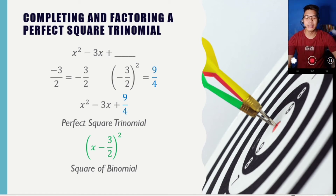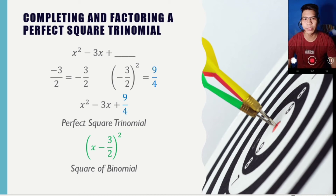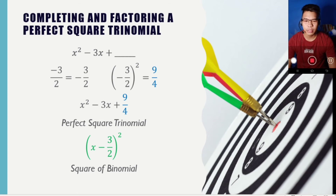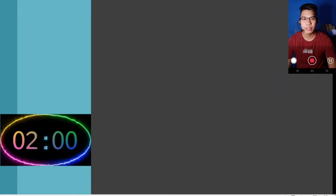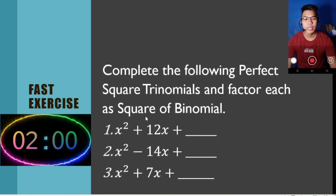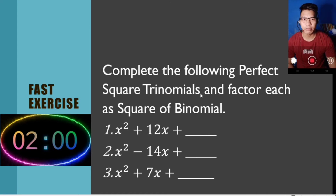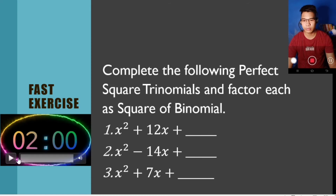We're going to use this process in solving quadratic equations by completing the square, so this is a very important part of those steps. Now we are ready for our fast exercise. Complete the following perfect square trinomials just like what we did before, and factor each as a square of binomial. I will give you two minutes to finish the fast exercise — your time starts now.